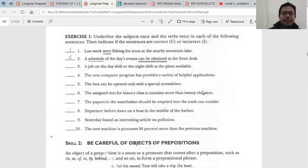Then guys, look at number three until number ten. I will explain number ten: 'The new machine is processes 50 percent more than the previous machine.' Can you imagine? 'Is' is a verb, 'processes' also a verb. It is wrong, why? Because it contains double verbs.